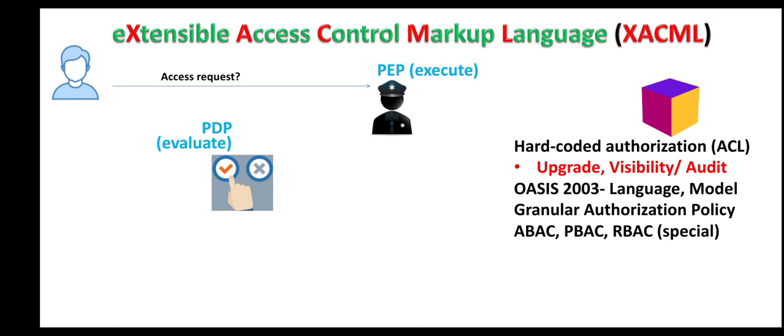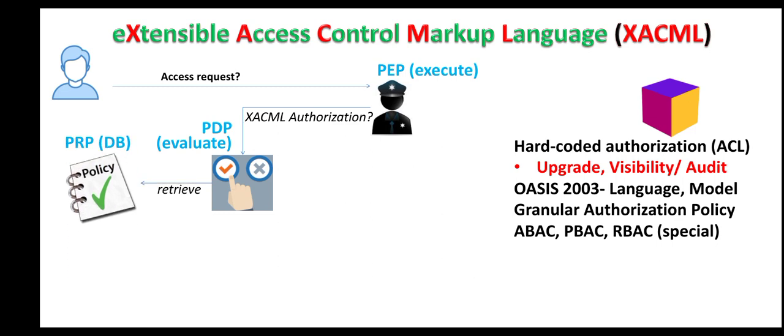The Policy Enforcement Point forwards this access request to the Policy Decision Point, which is the evaluator of this access request by a user to a resource. The Policy Enforcement Point will convert the user access request into an XACML authorization request and forward it to the Policy Decision Point. The Policy Decision Point will then approach the Policy Retrieval Point to retrieve the policy from a database. This Policy Retrieval Point is a database of policies or authorization policies, and this database is managed by the Policy Administration Point.